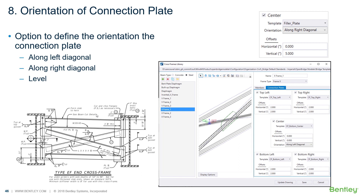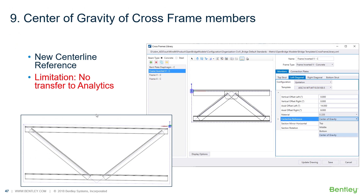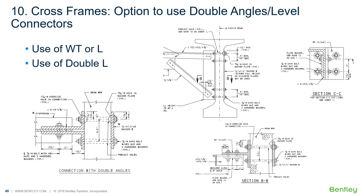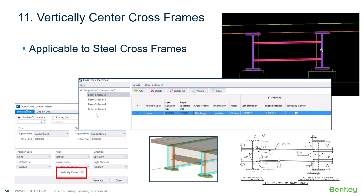For modeling steel structures, connection plates can now be oriented along the diagonals — it used to be just horizontal, but now we can follow any orientation of diagonals. We can also place cross frame members by center of gravity, use double angles or lever connectors when connecting cross frames especially to concrete beams and roll shapes, and we can now vertically center the cross frames, which is only applicable to steel cross frames.